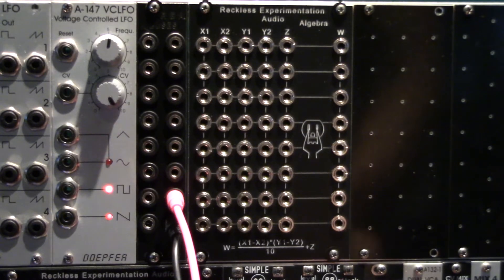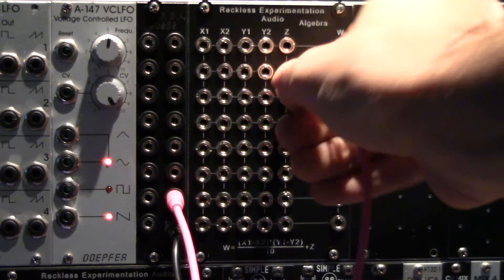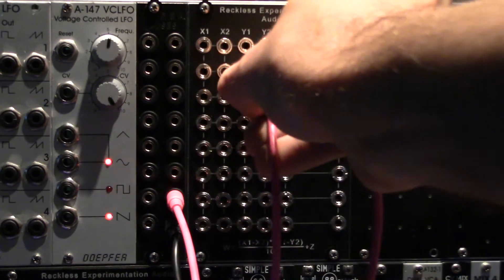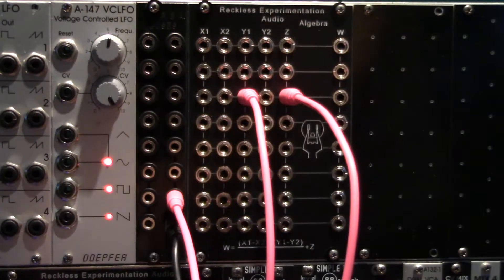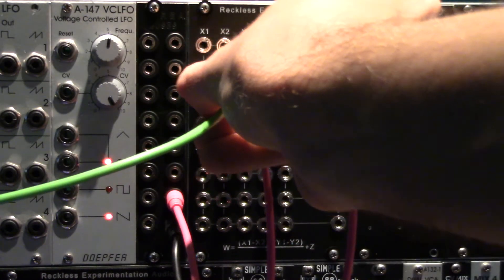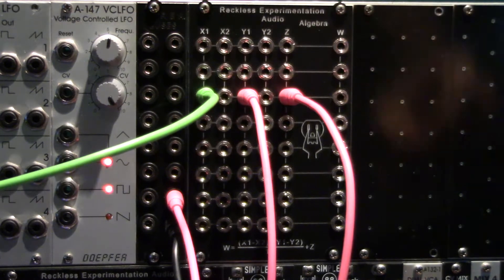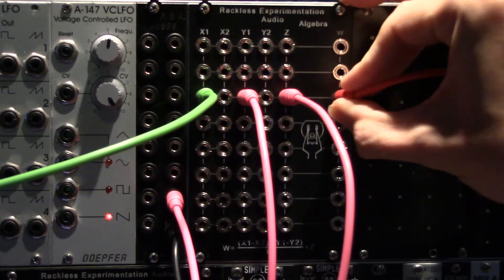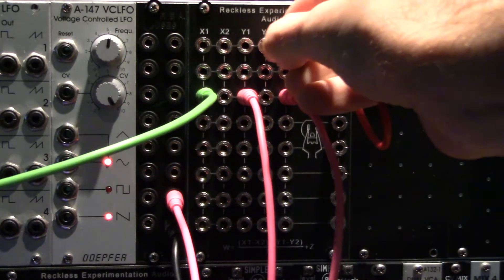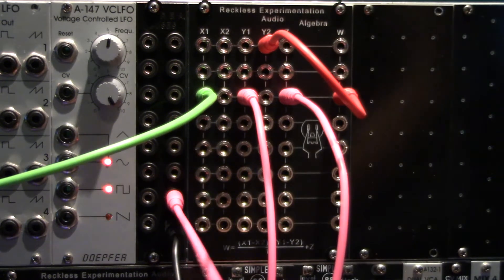A patch similar to this can be used to add some tremolo effect to a sound. Connect an envelope generator to Y1 and Z and an LFO to X1 of a channel. Take the output of this channel and connect it to Y1 of another channel and connect your sound source to X1.